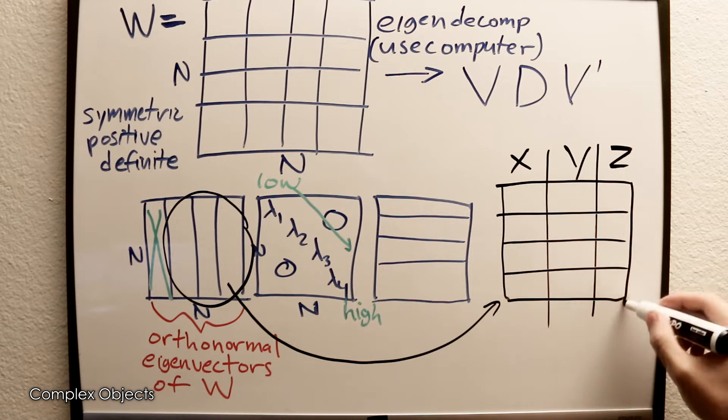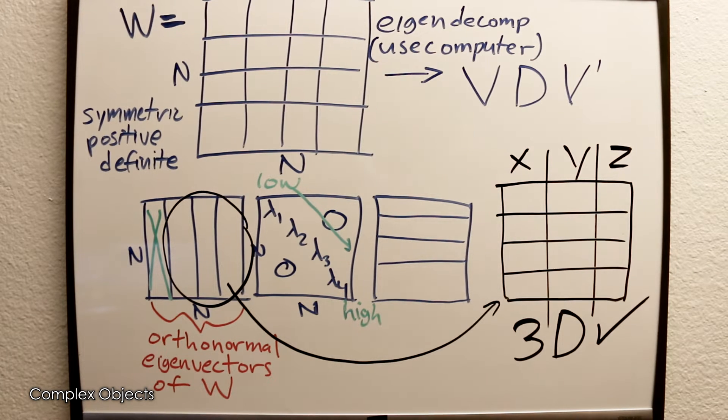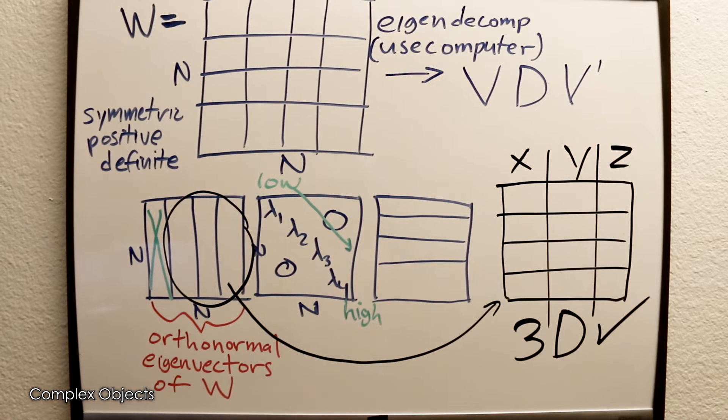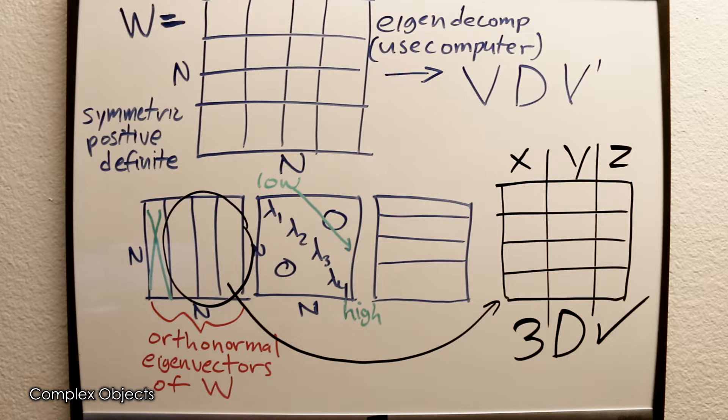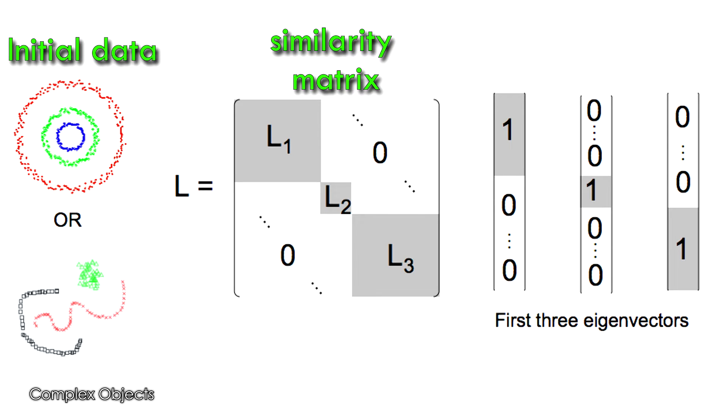Those row vectors will become the embedded points. That's the basic procedure behind a lot of algorithms within this family, which you might call spectral dimensionality reduction algorithms—spectral because they're getting the embedded points using the eigenvectors of some matrix.